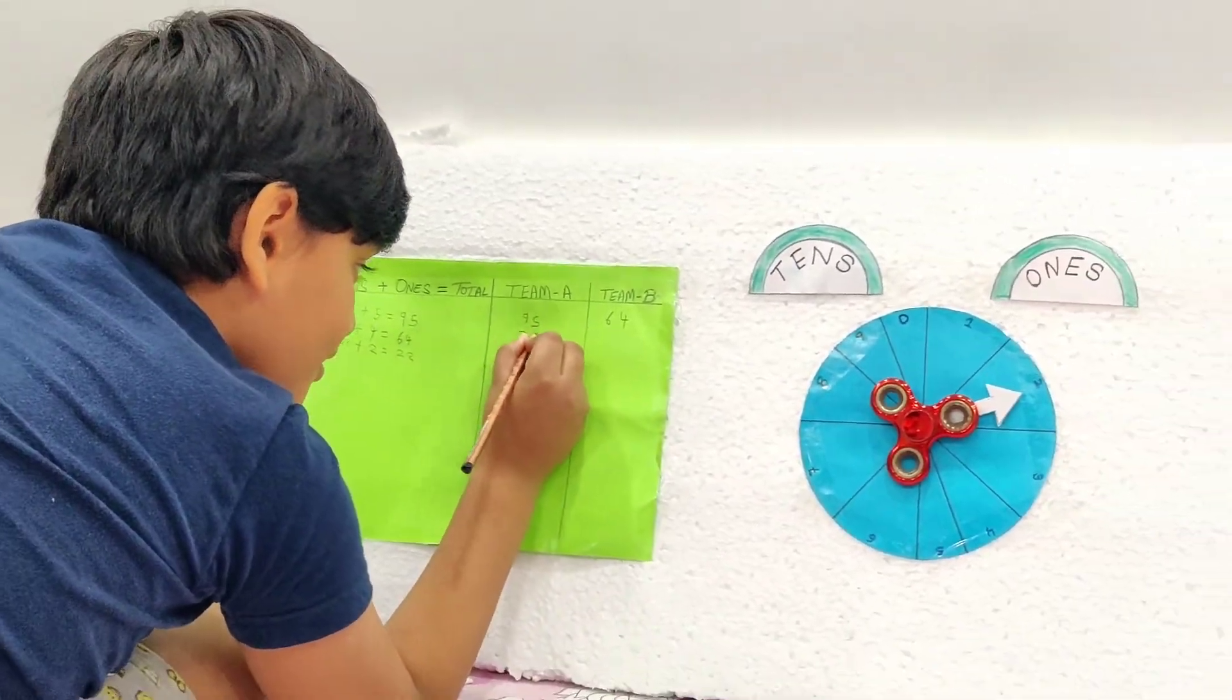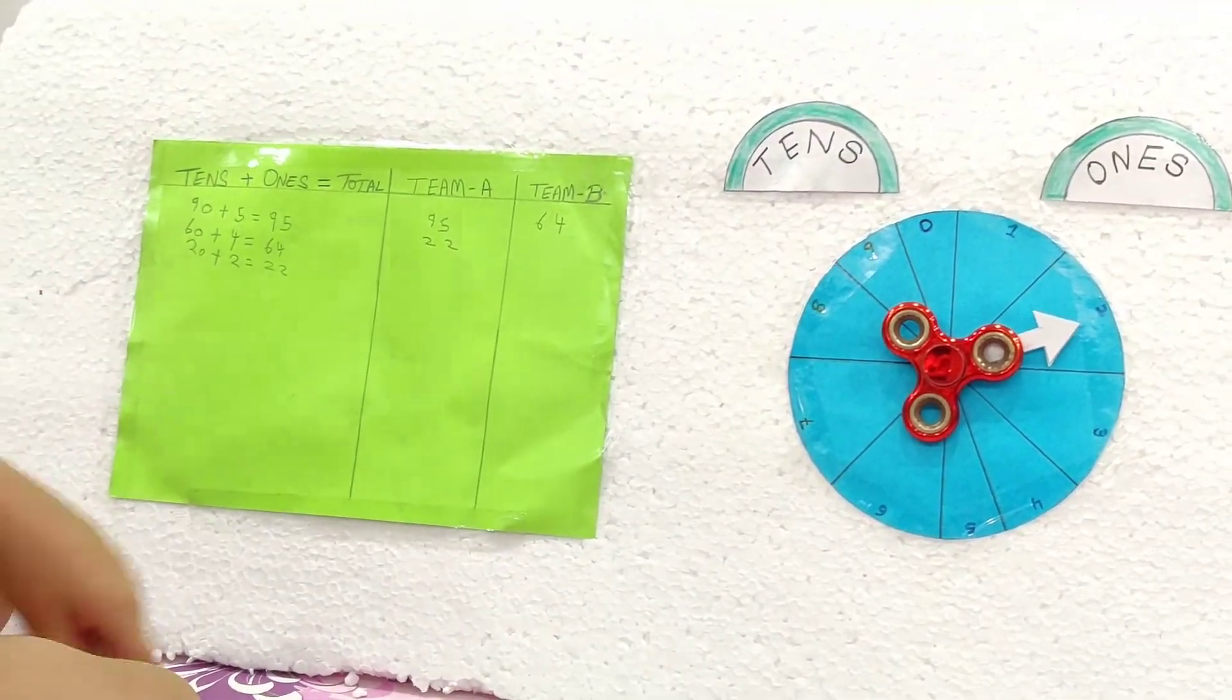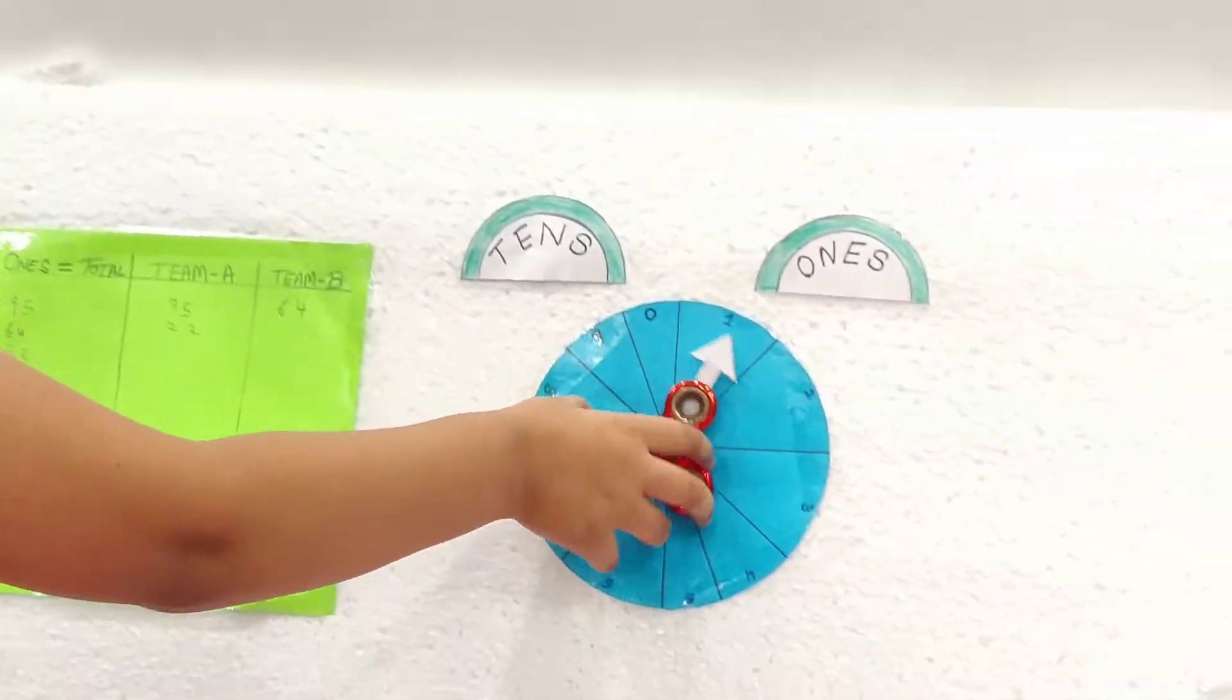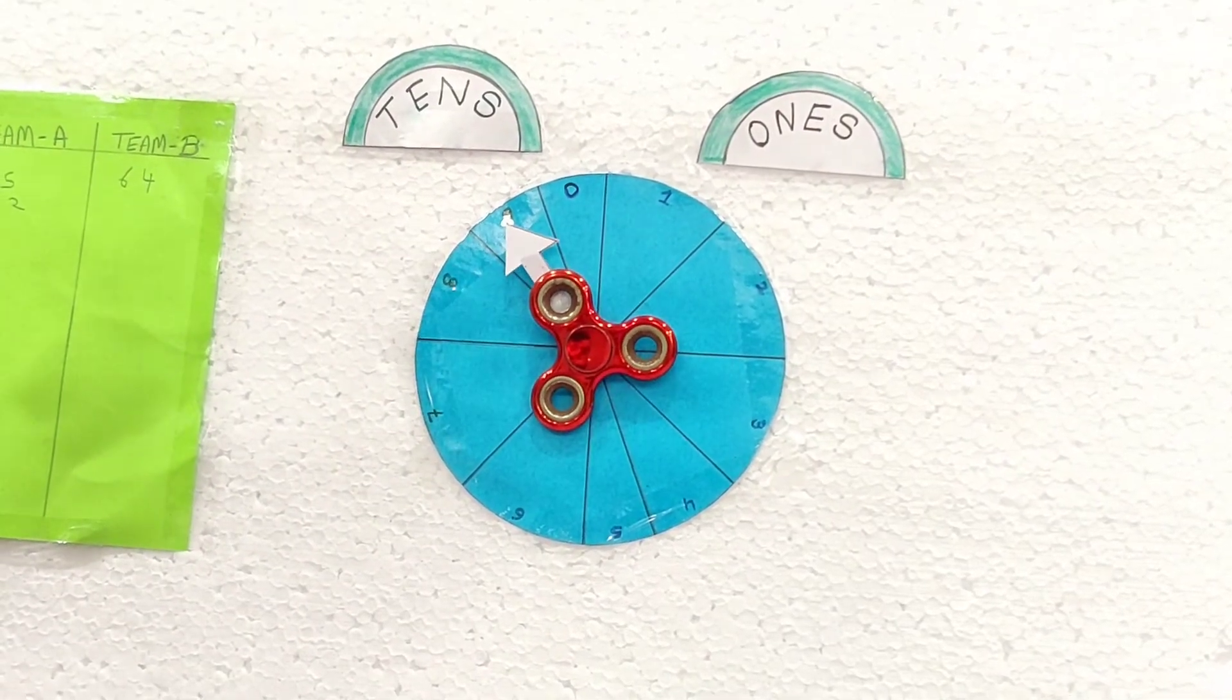So A team has 95 and 22 points also. Now this is time for team B. We will do it at 0 and then spin it.